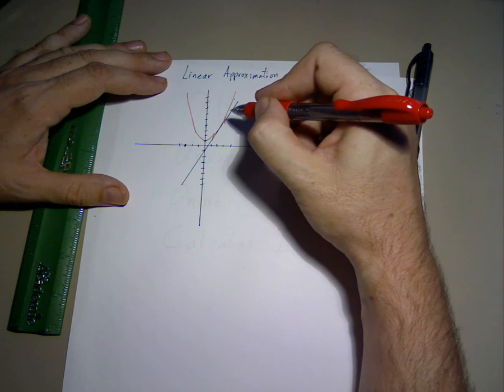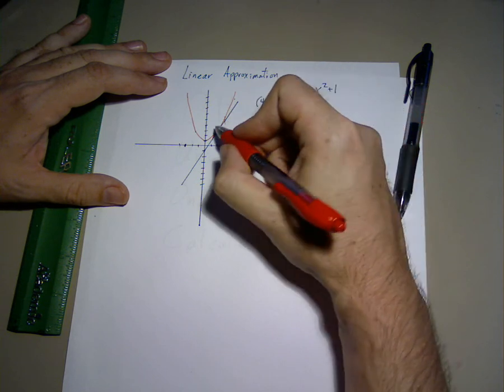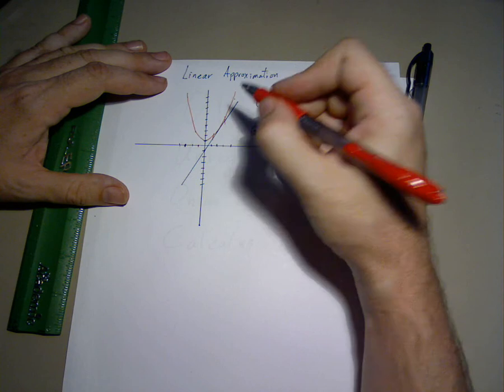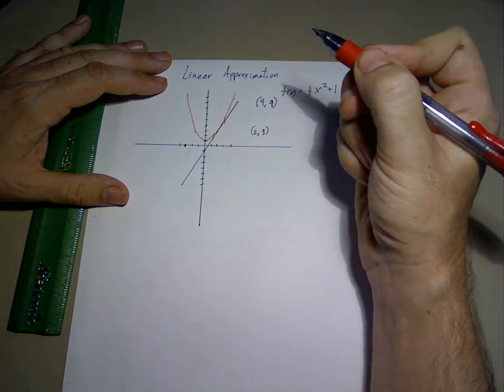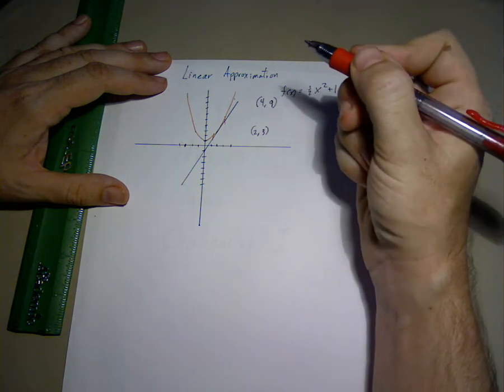Depending on the graph, the linear approximation may only be good for a very small distance. Nonetheless, it can help us when other calculus methods fail us.